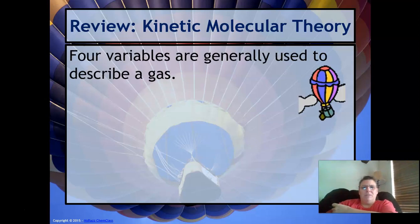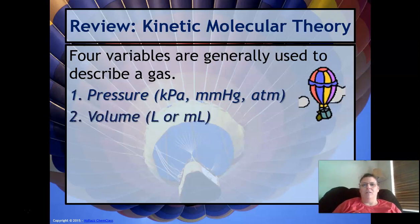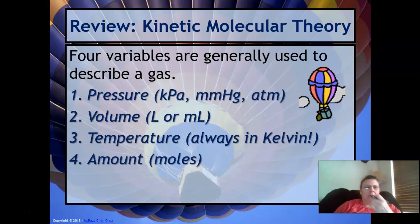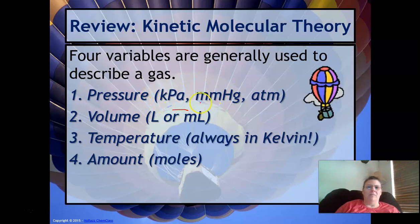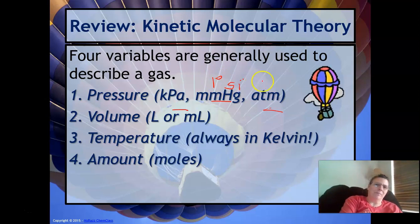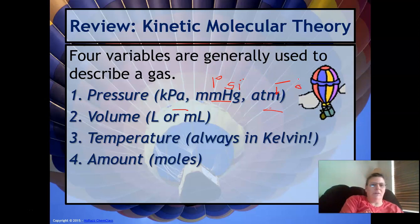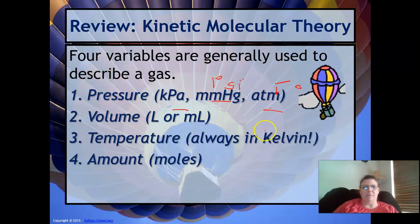The four variables we talked about, and that are on your foldable that we did before we left, were pressure, volume, temperature, and moles. On your foldable we have kilopascals, millimeters of mercury, and atm. We also talked about psi and torr.